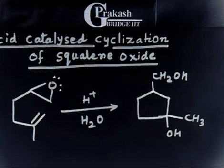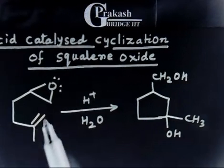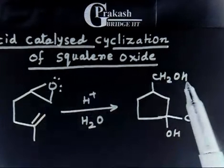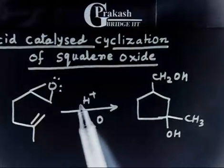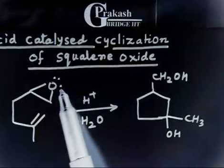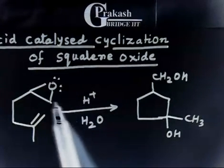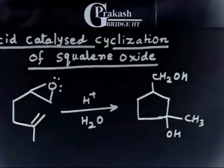How will you proceed? First, see what changes are taking place — that is the key hint. You can see that this oxygen has become CH₂OH, and we have H⁺. What can H⁺ do? H⁺ can act as an acid catalyst. This lone pair can attack on H⁺, and if it attacks, then we can open this ring and then attack the double bond. This is enough of a hint — you can proceed.